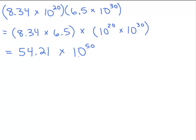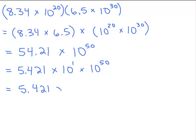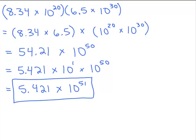When you look at your answer, is it in scientific notation? No, it's not because 54.21 is bigger than a single digit before the decimal point — it has to be a number between 1 and 10. So I rewrite 54.21 in scientific notation: that's 5.421 times 10 to the 1st. Then 10 to the 1st times 10 to the 50th is 10 to the 51st. Now I've written this in scientific notation. That would be a real pain to move the decimal 51 places to the right.